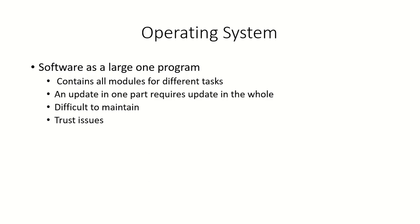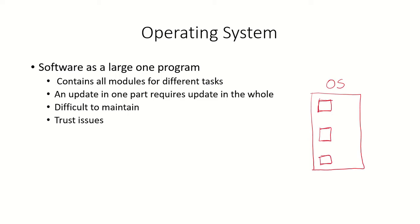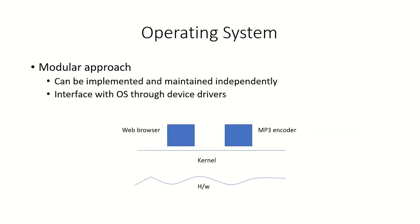The operating system is one large program consisting of code for various tasks, comprising modules for different tasks. If there is any update in any particular module, the whole operating system will have to be updated, making it difficult to maintain. Also there might be trust issues between the modules of the system, so another way of implementing the operating system is to use the modular approach.